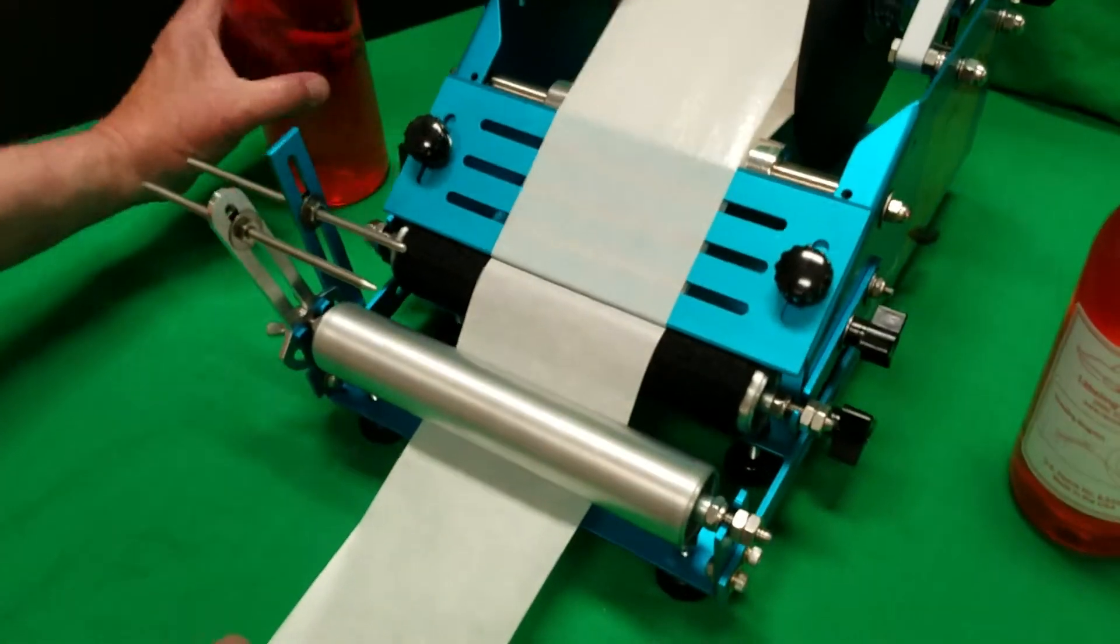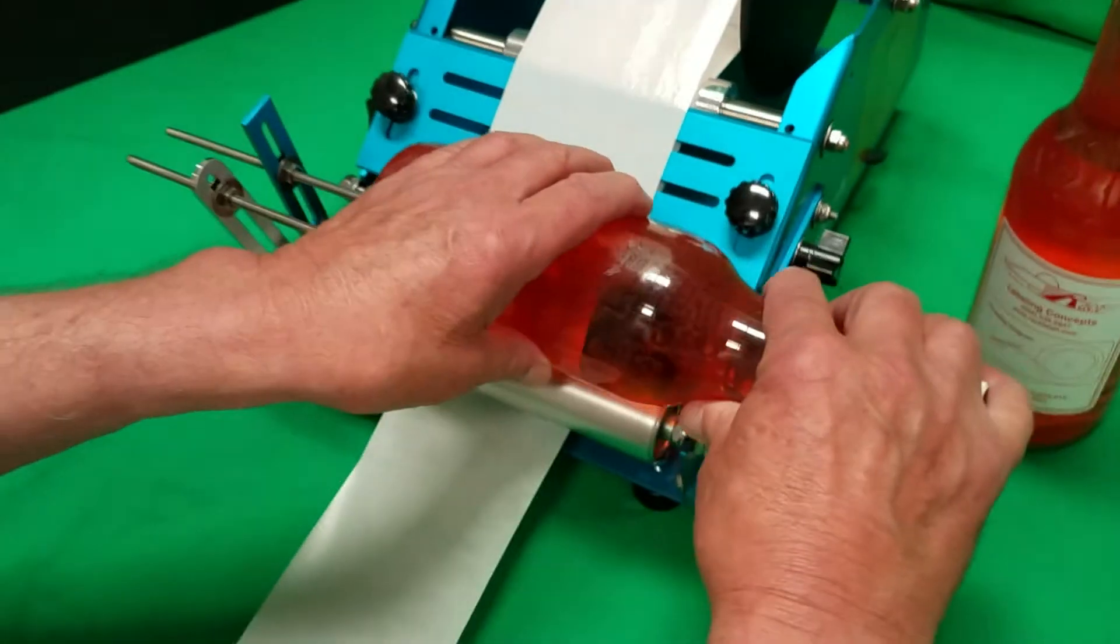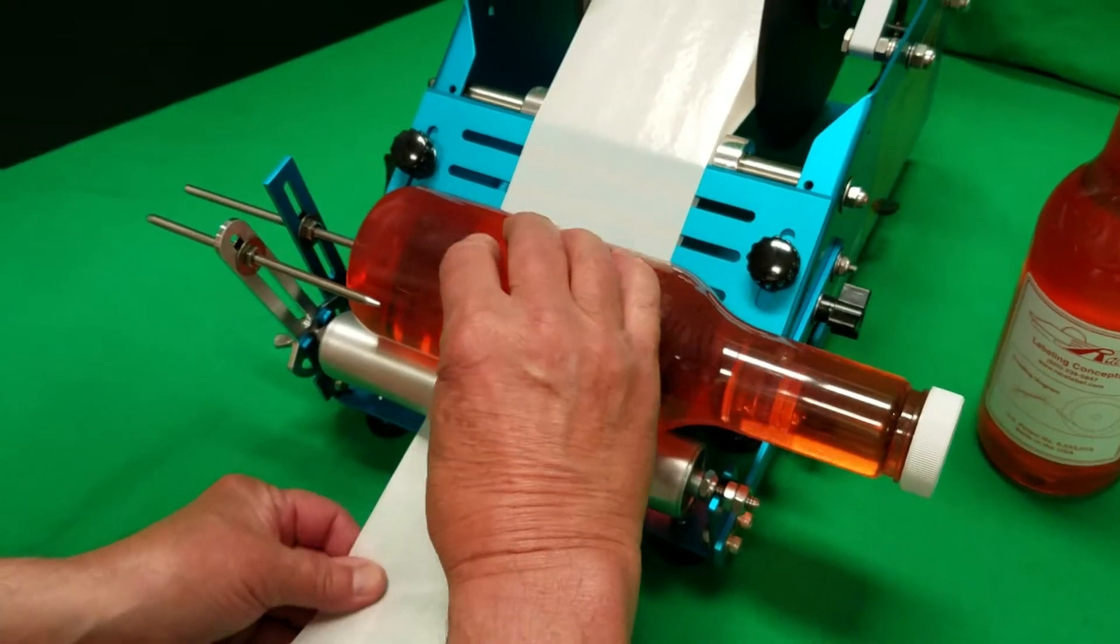I'll demonstrate that one more time. Into the machine, up against the bottle stop, we apply the front label.